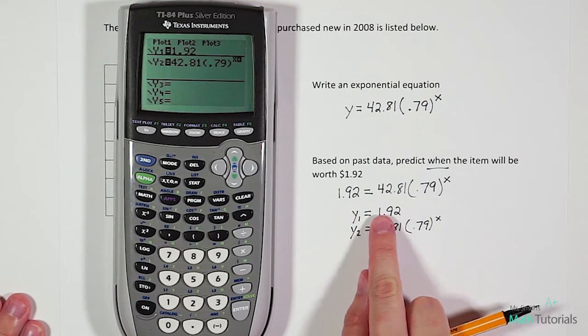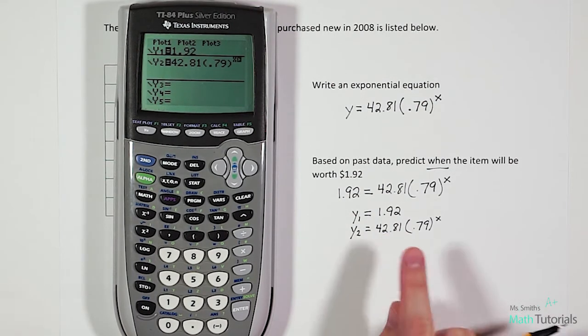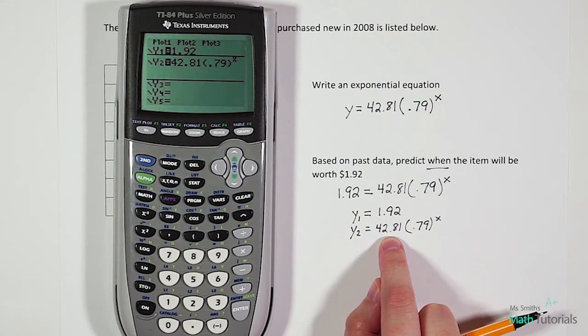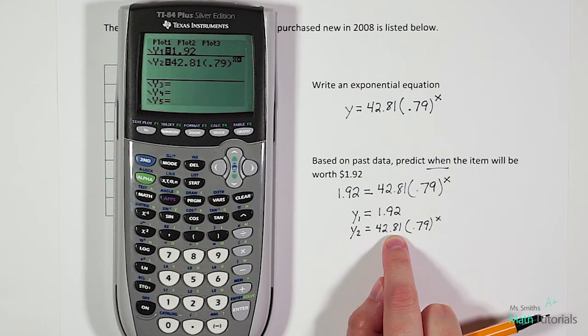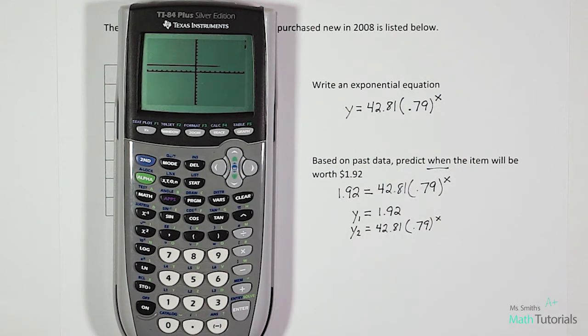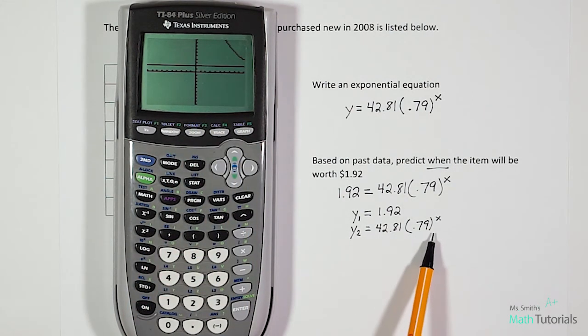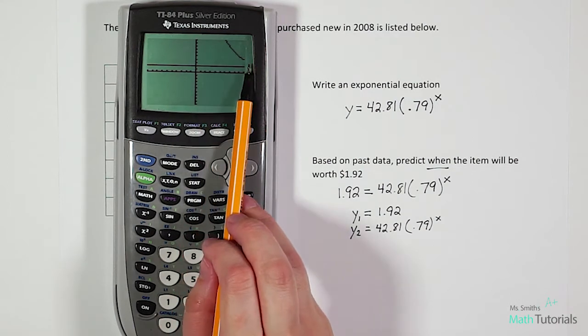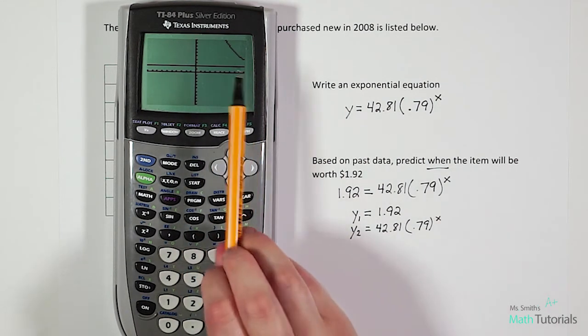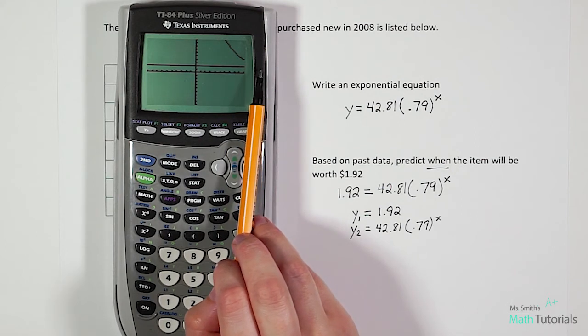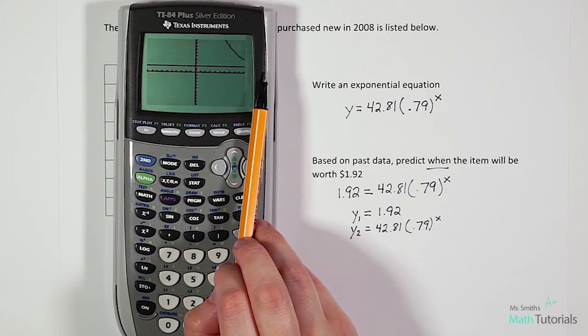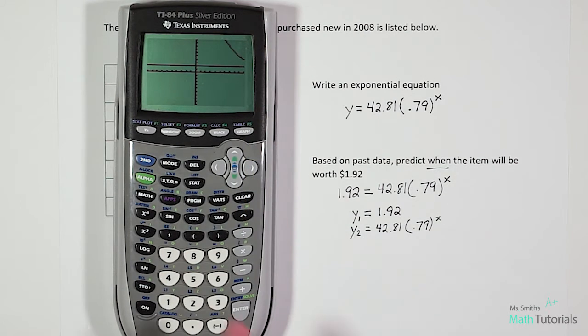Then we're going to arrow down, and in our Y2 equals, we're going to put this part of the equation. So 42.81 times 0.79 to the power of X. And so what we're doing by creating this setup is we know that if we set these two values equal to each other and we graph them, they're going to intersect at our answer. So let me show you what I mean. If I go to graph this, that would be our first line. That's our horizontal line at $1.92. And then this line coming down, that's our exponential equation, which we have listed here. And we want to know where do these two lines intersect? I can't see it here.